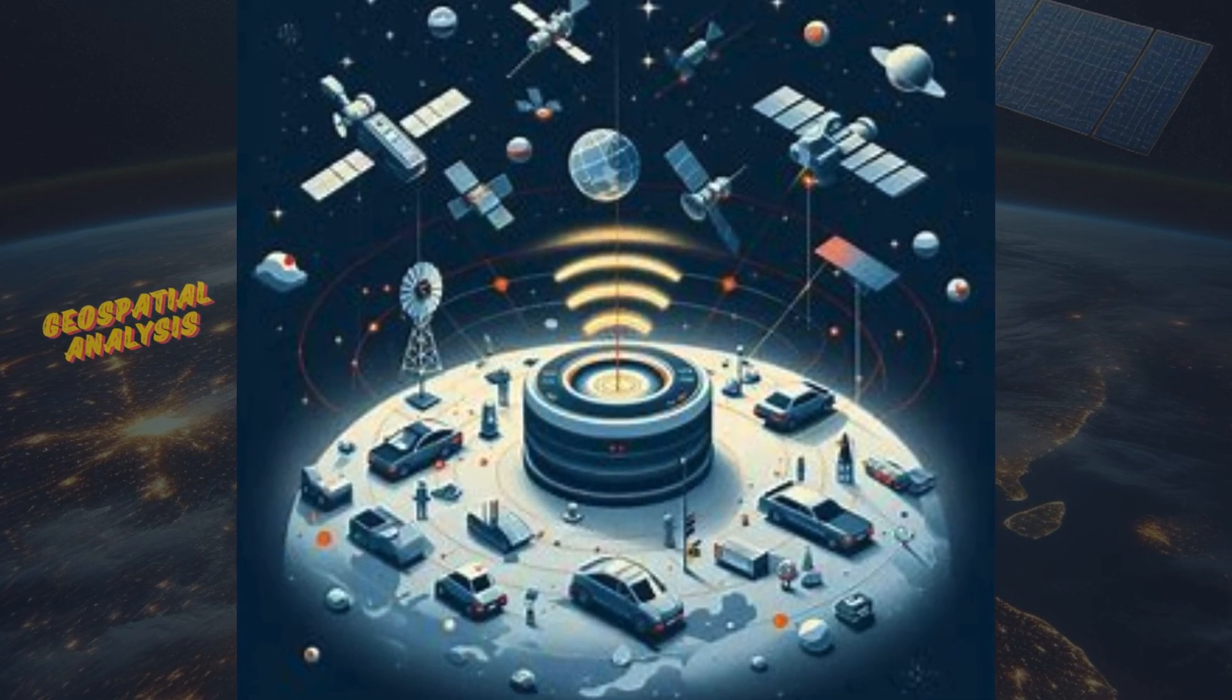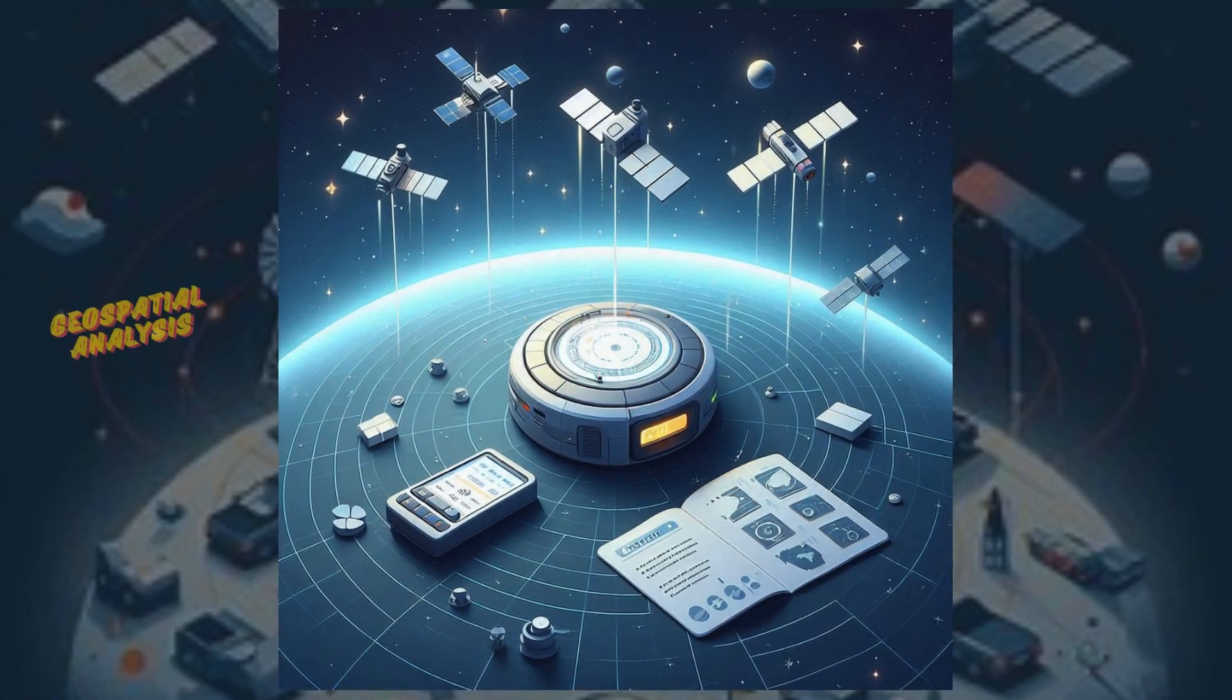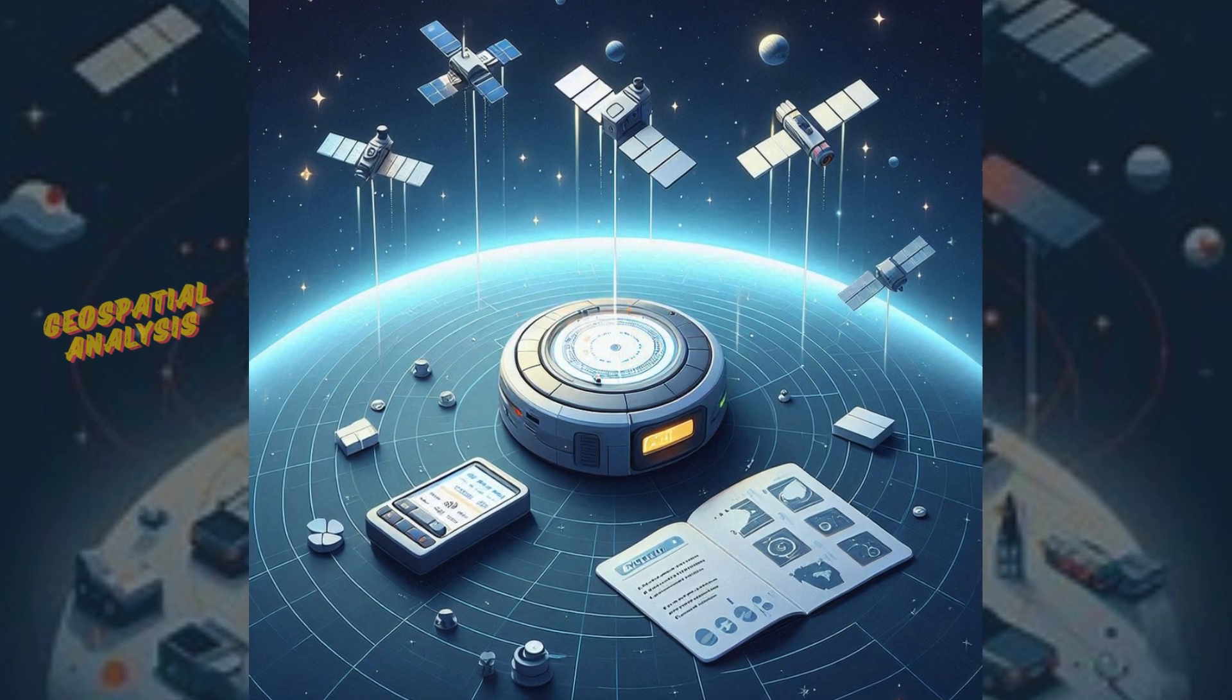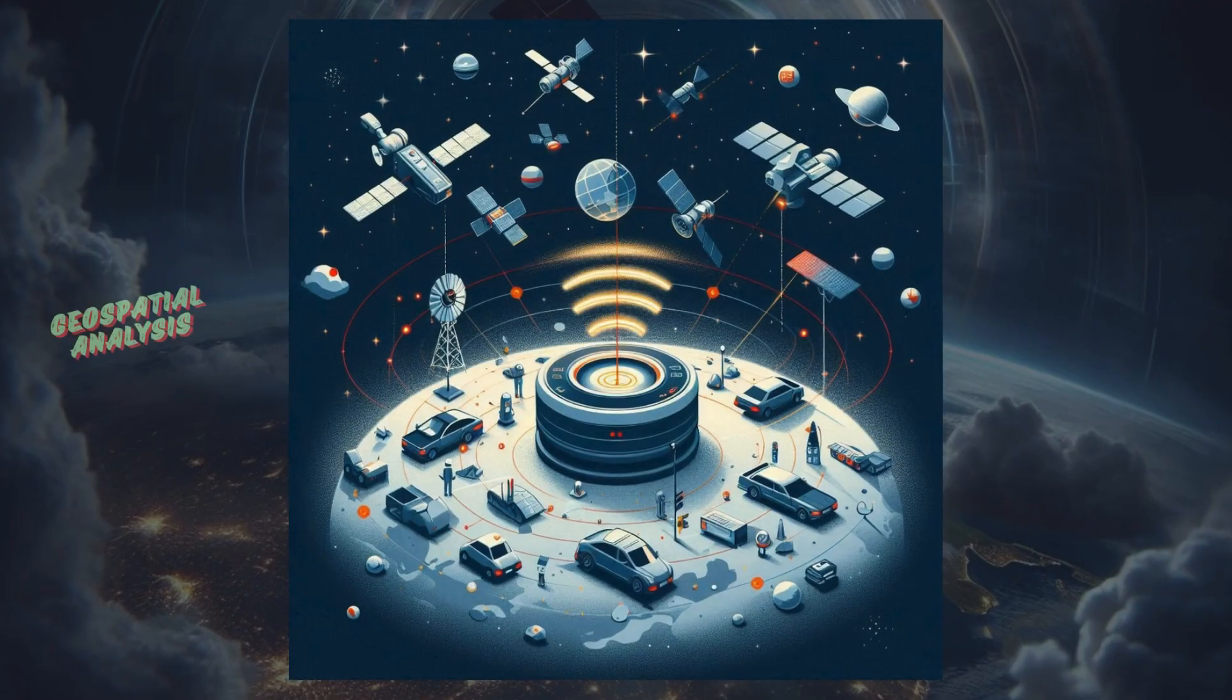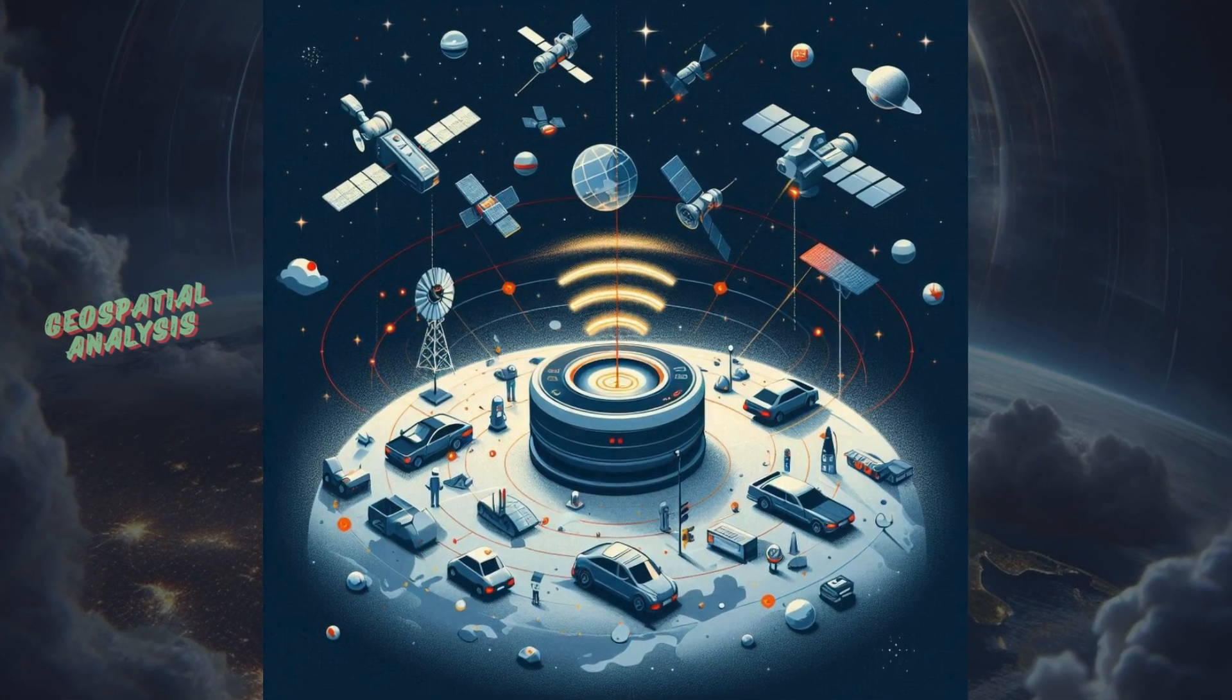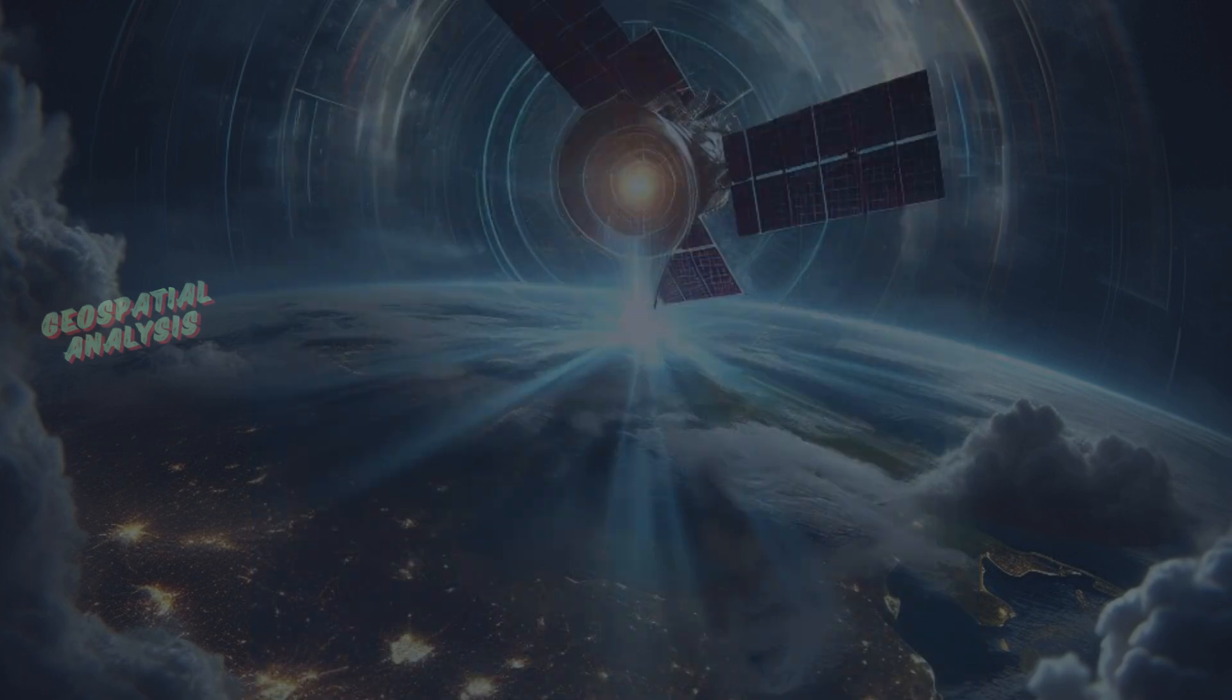So, how does GNSS actually work? It all starts with these satellites. Each GNSS system has a constellation of satellites orbiting the Earth, transmitting signals down to the surface. These signals contain information about the satellite's position and the exact time the signal was sent.